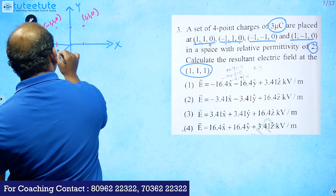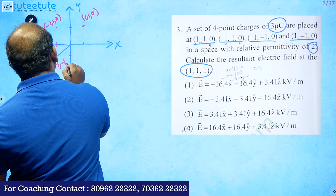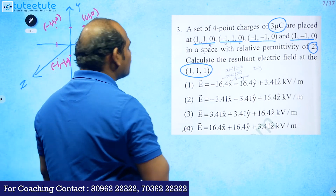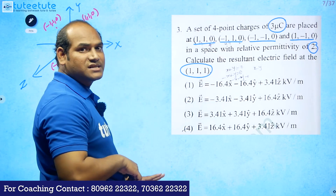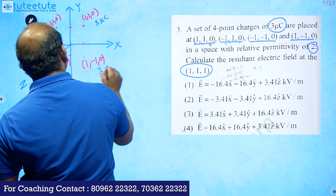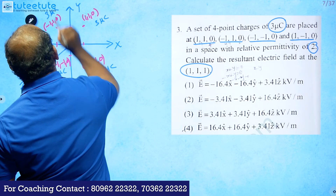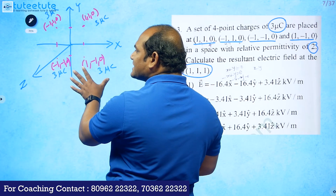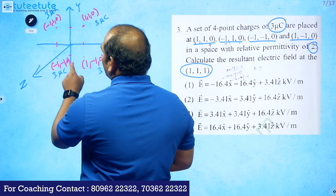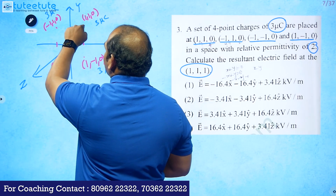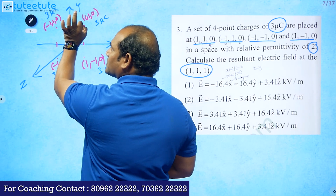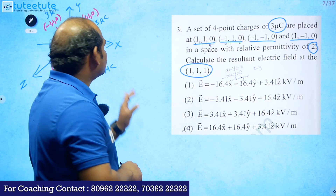So we have the four points, each having a charge of three micro coulombs. We need to calculate the electric field at the field point (1,1,1). The point (1,1,0) is on the x-y plane; since the z-axis comes out of the board, moving z to one brings the field point out into space.